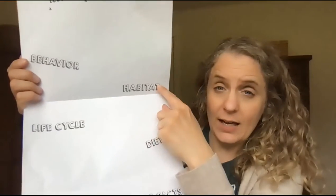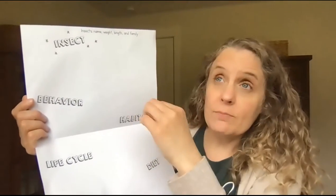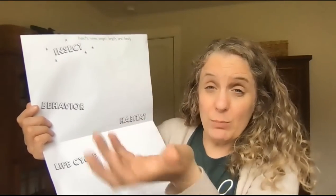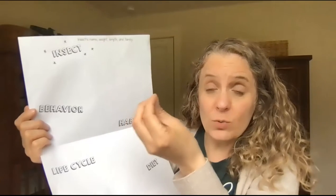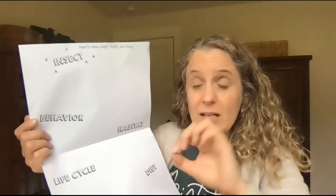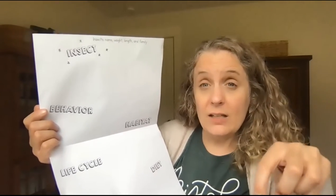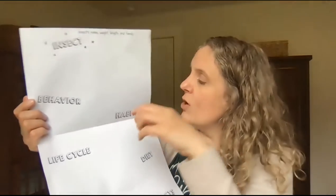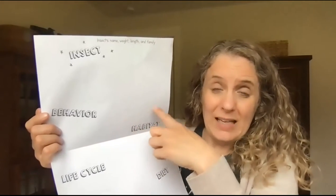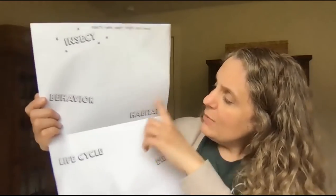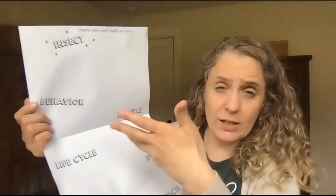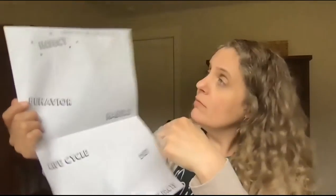Habitat — we know habitat means where your insect lives. You can write about the environment it likes to live in: does it like to be in the woods, does it like cool or hot weather? Some insects, like many caterpillars and silkworms, need a certain type of plant — the adult lays eggs on the plant that the babies are going to need to eat when they hatch. Habitat is where the insect lives, and you can include what parts of the world or country your insect can be found in.